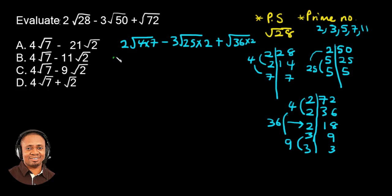So the next stage is you write out the number then you square root the perfect square. The square root of 4 will be 2, so you bring that out, then you leave the remaining number which is 7. Then you write 3, the square root of the perfect square in here is 25. The square root of 25 is 5. Then the remaining square root is 2. The next is the square root of 36 which will give us 6, so you bring out the 6 then you write down the square root 2.